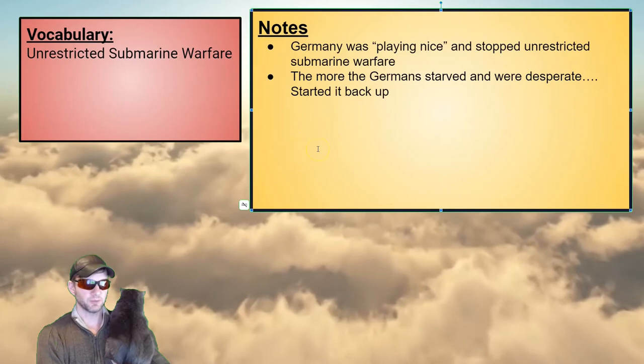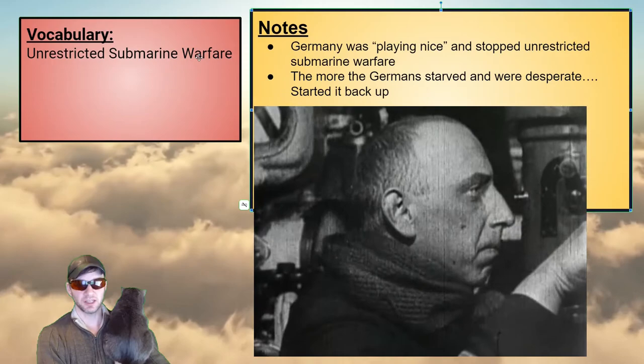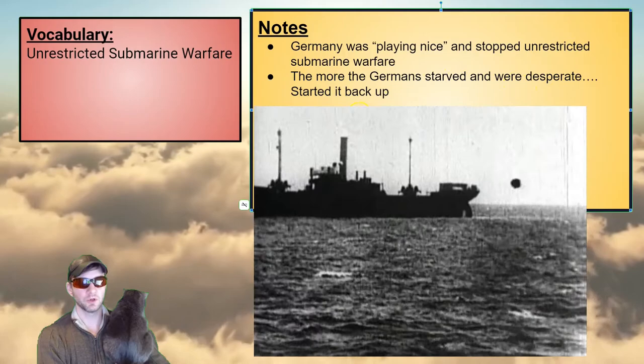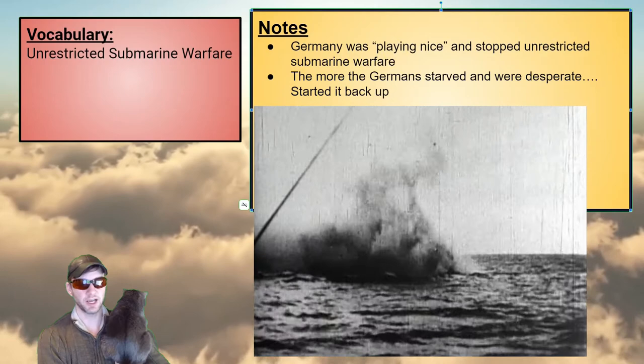One effect of the blockade on German supplies was that Germany had started the war practicing unrestricted submarine warfare — sinking every ship. They stopped, but once Germany was starving and desperate towards the end of the war, they didn't like England's food blockade policy and started unrestricted submarine warfare back up. Some harsh blockades led to harsh reactions.